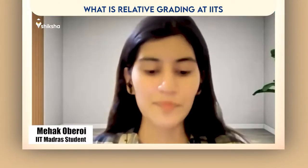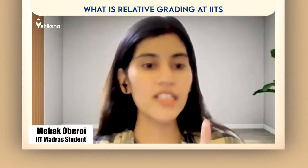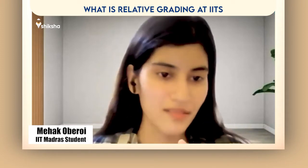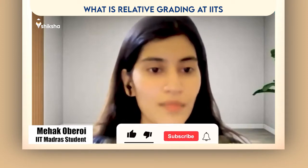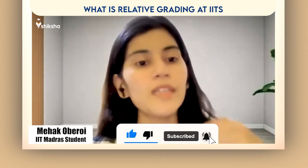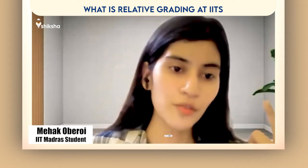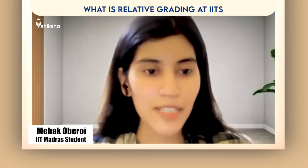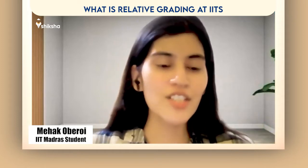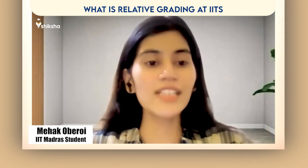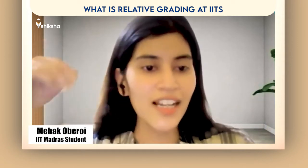What is relative grading? If you score 70 marks out of 100, it doesn't mean you get a 7 GPA — you can also get a 6 GPA, a lower one. Why? Because your peers might have scored above you. The average value is taken and kept as 8 GPA. So if the average is 85 marks and you scored 70, that 85 becomes 8 GPA and your 70 becomes lower.